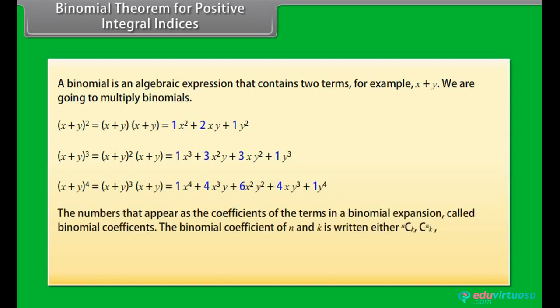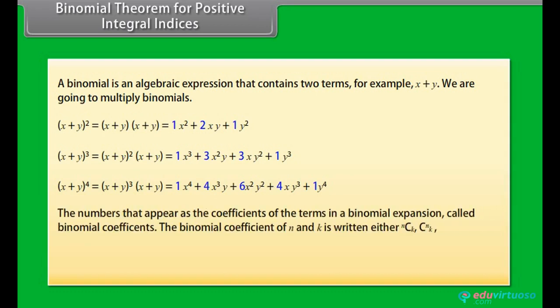The numbers that appear as the coefficients of the terms in a binomial expansion are called binomial coefficients. The binomial coefficient of n and k is written as nCk.